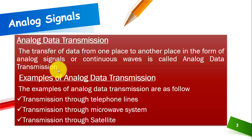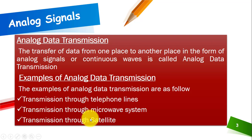The transfer of data from one place to another in the form of a continuous wave is called analog data transmission. For example, whatever data moves through telephone lines is an example of analog data transmission. Data transmission through a microwave system and satellite communication — the transmission between satellites — are also examples of analog data transmission.